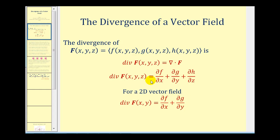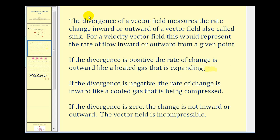The divergence of a vector field measures the rate of change inward or outward of a vector field, also called sink. For a velocity vector field, this represents the rate of flow inward or outward from a given point. If the divergence is positive, the rate of change is outward, like a heated gas that is expanding. If negative, the rate of change is inward, like a cooled gas being compressed. If the divergence is zero, there is no inward or outward change and the vector field is called incompressible.